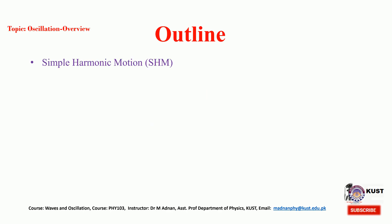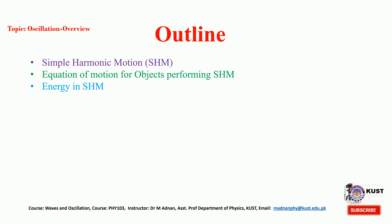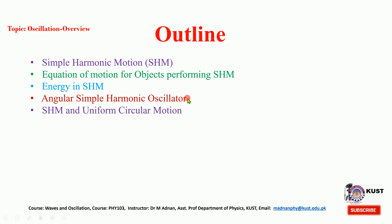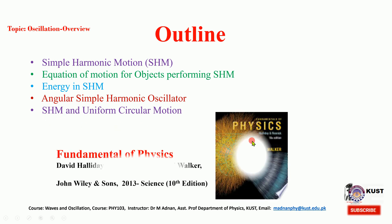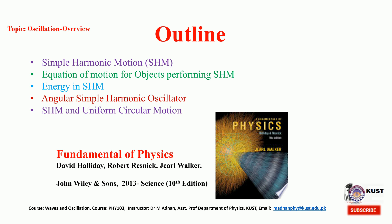These are the outlines. First we will see what is meant by simple harmonic motion, and how one can describe mathematically the object performing simple harmonic motion. After that we will see energy in simple harmonic motion, then review some examples of the simple harmonic oscillator, and at the end we will review uniform circular motion and see the similarities between its equations and those of simple harmonic motion. We follow the book Fundamentals of Physics by Halliday, Resnick and Walker, 10th edition.